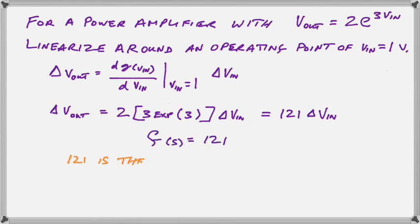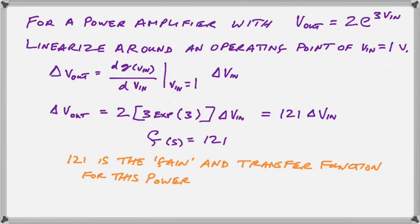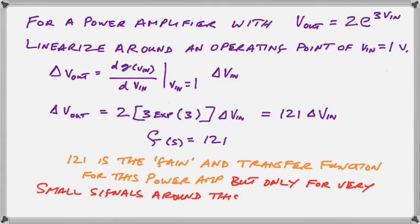So, in actual fact, the transfer function and the gain of our power amp is just a number. However, the transfer function is 121 and the gain is 121. What could be easier? But, only for very small signals around this particular operating point.